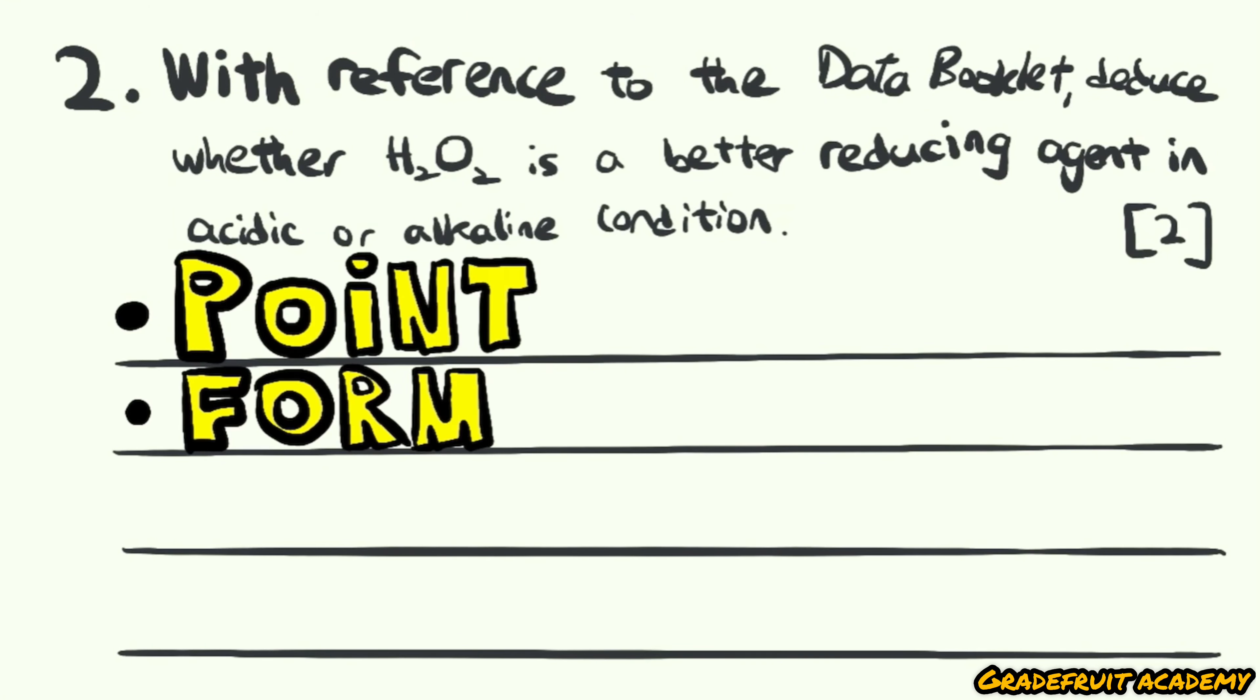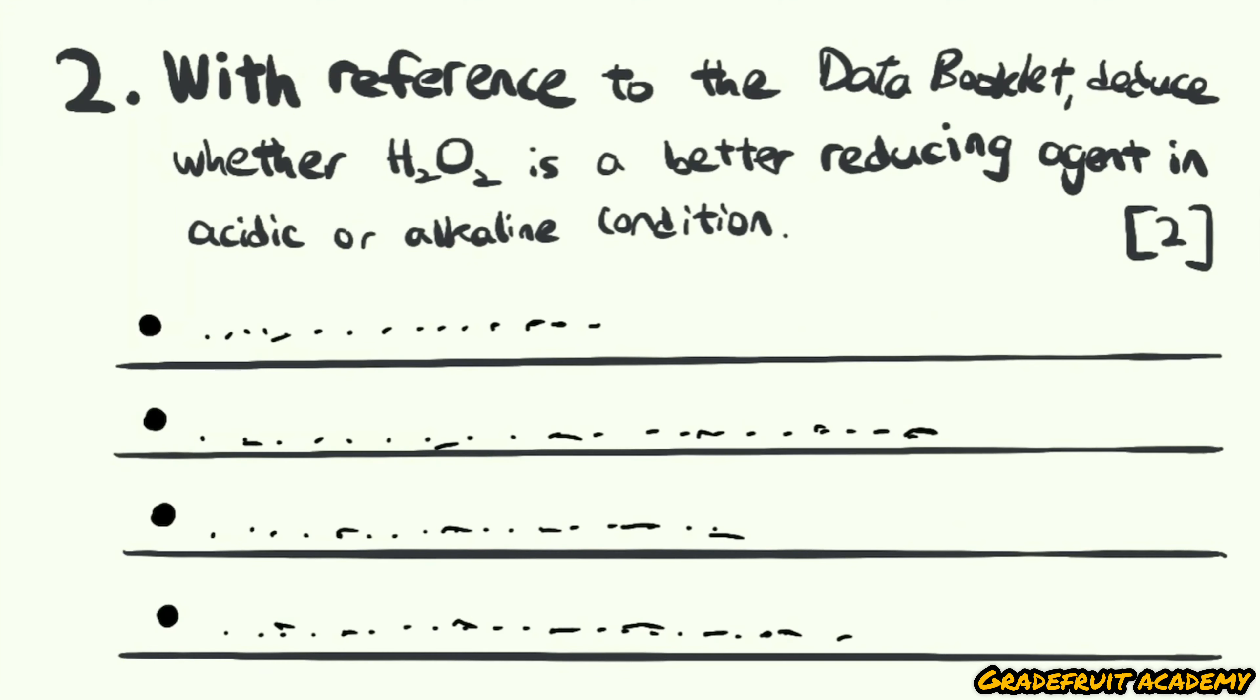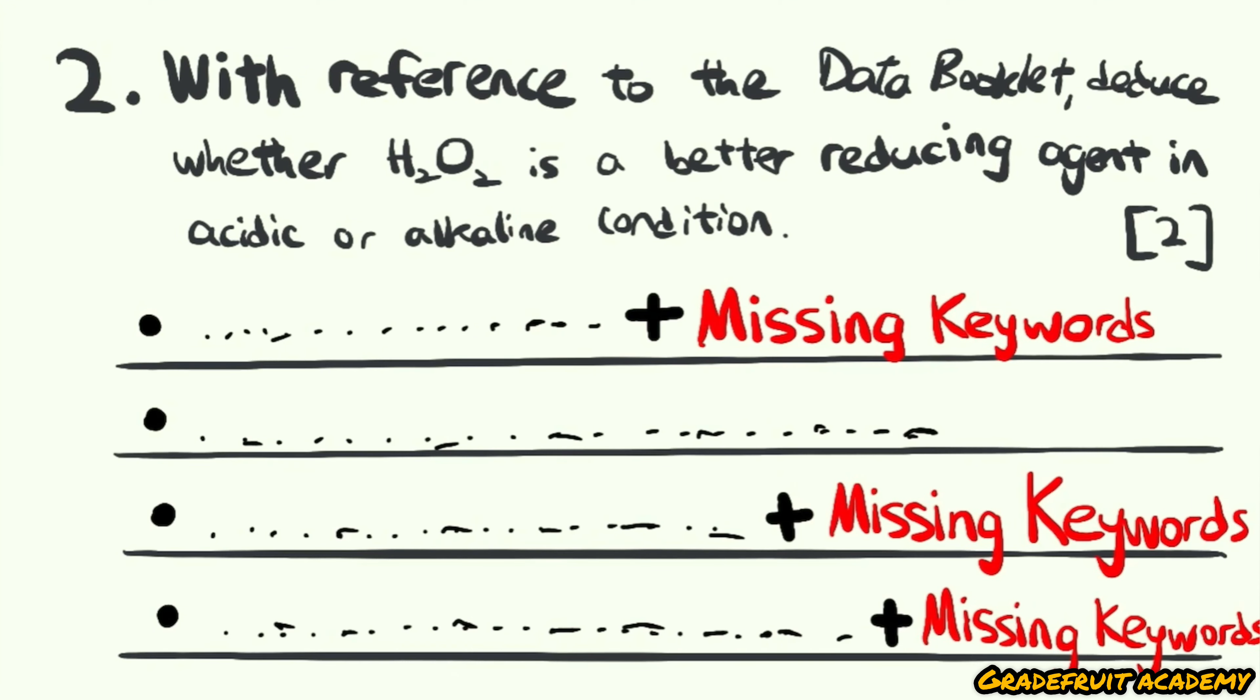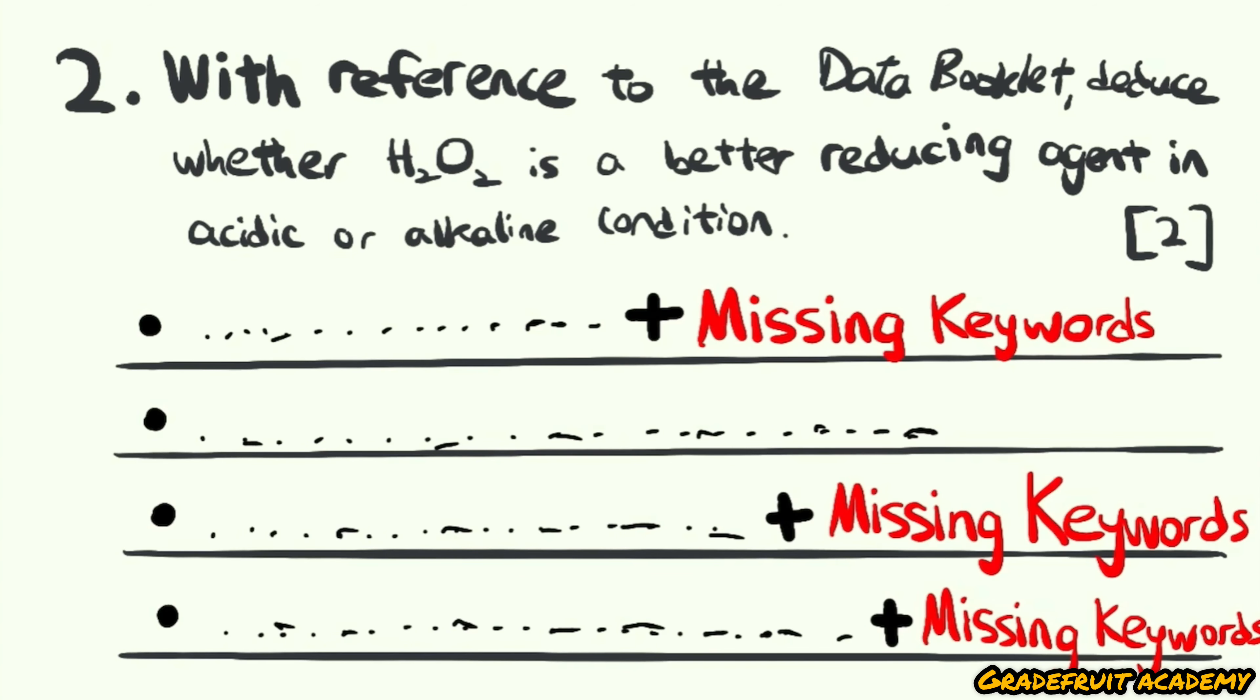And an answer like this can be produced by using what I call the point form method. What we're doing is basically breaking down our answers step-by-step or point-by-point, and from here see how we can beef up or improve each point by adding in any keywords or points that we've missed.